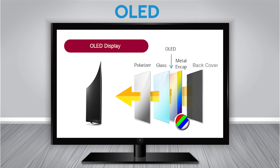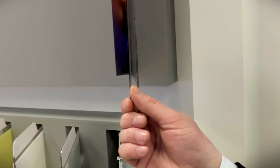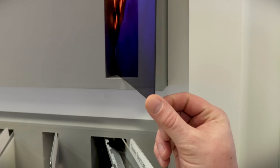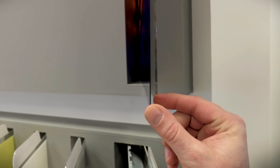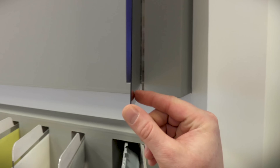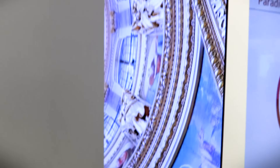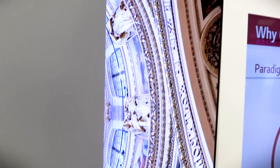OLED, which stands for organic light-emitting diode, is a much more simple design that doesn't use an LCD panel. Instead, OLEDs produce their own light and colors. That's why you will sometimes hear OLED referred to as an emissive display.